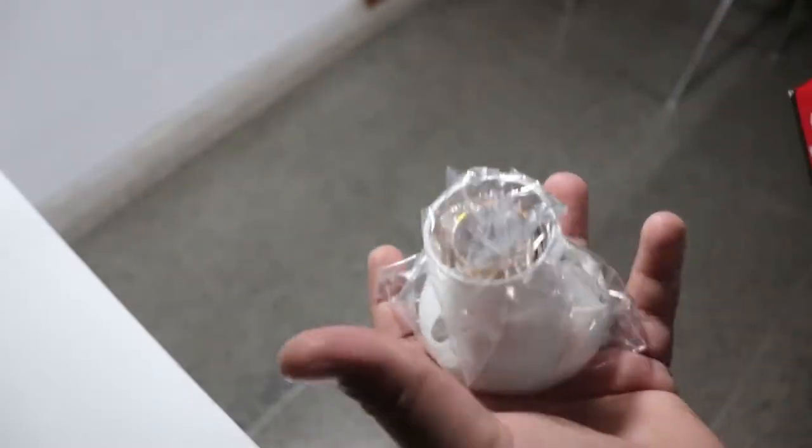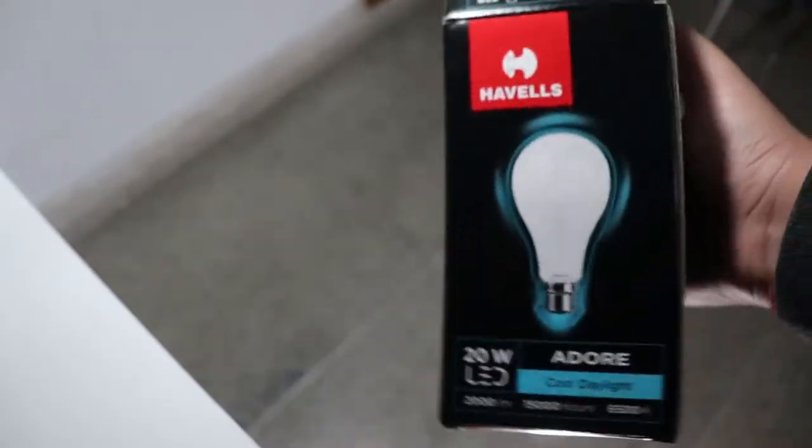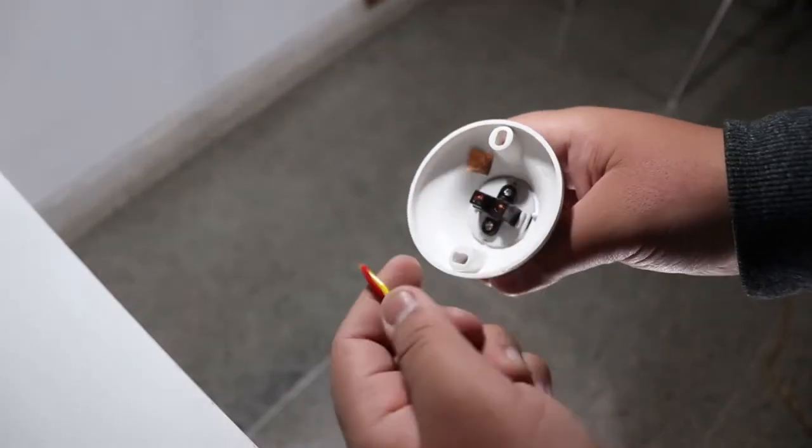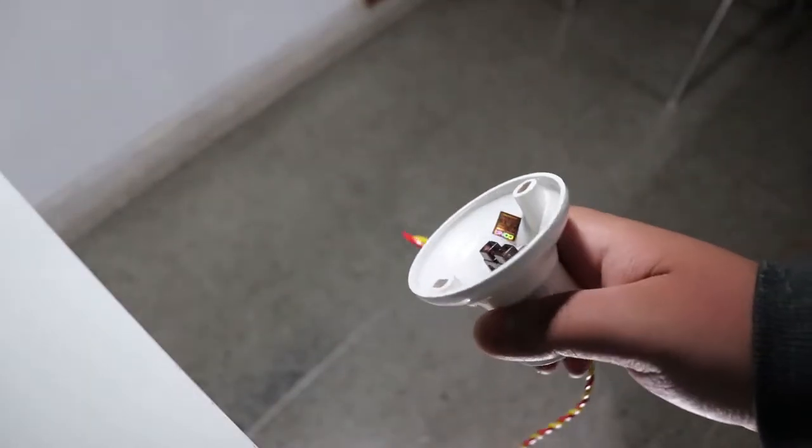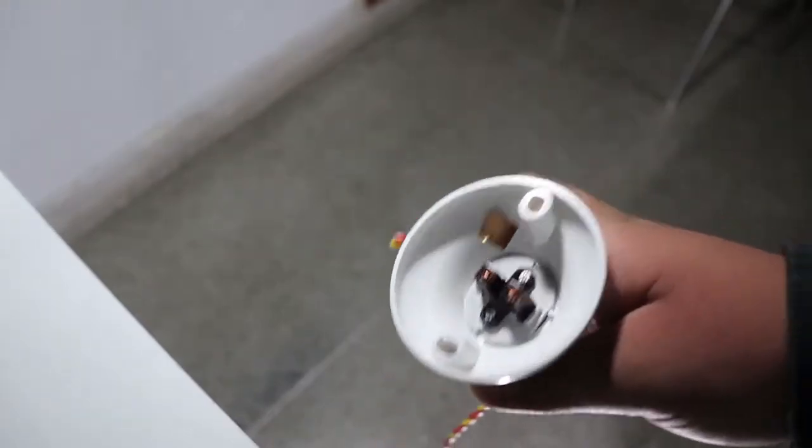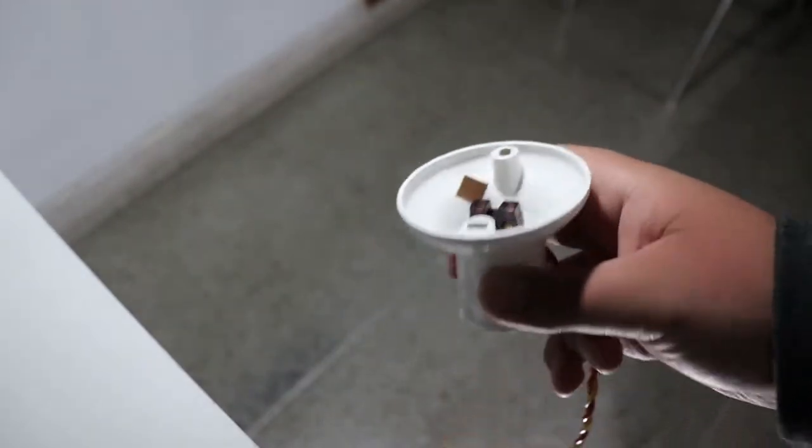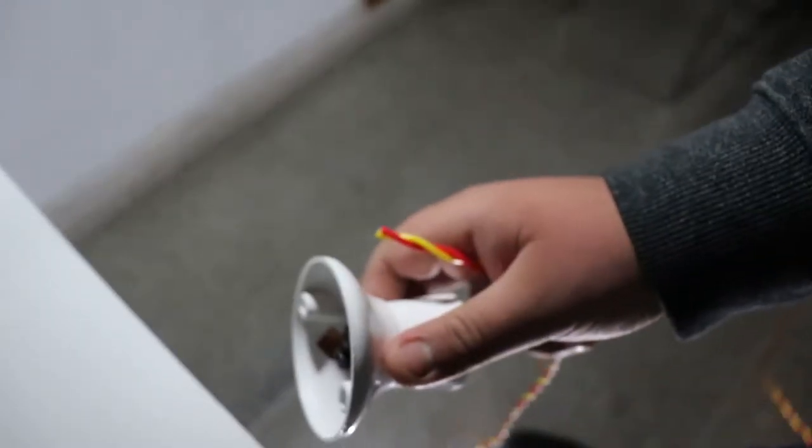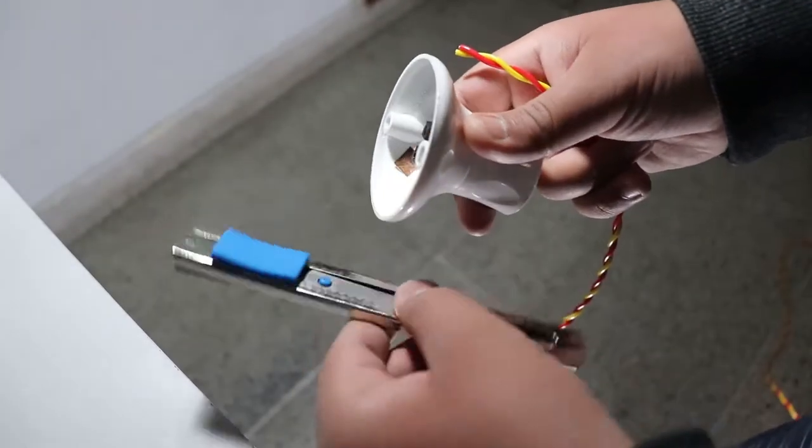First of all, we keep it on the side and we fix our bulb holder. This is my B22 socket. You will also need a B22 socket. I will leave the link below. You need to add this wire to it. You can also do it with an electrician, or if you want to do it yourself, then you have to do it with proper supervision because there will be current. You could get shocked. We need to remove this wire with a knife or scissors.